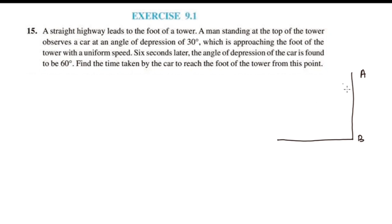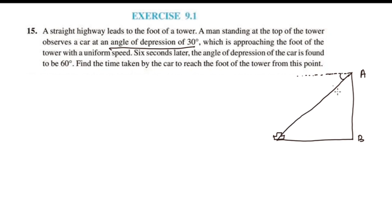A man standing at the top of the tower observes a car at an angle of depression of 30 degrees. At the top of the tower, the angle of depression is 30 degrees. The angle of depression is measured from the horizontal level. So this angle is 30 degrees.